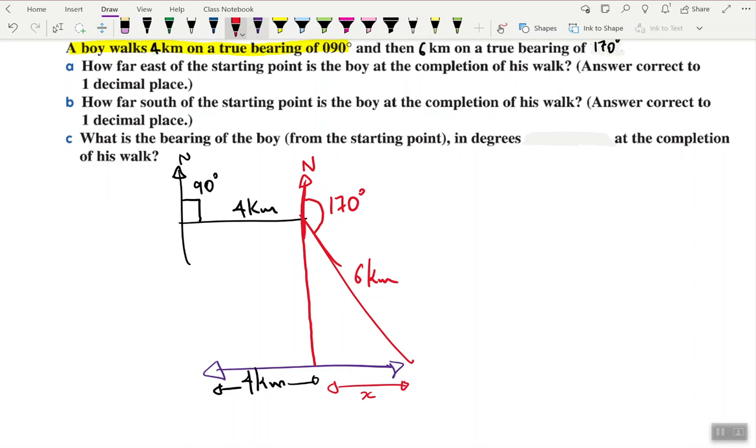I need to use trigonometry to try and figure this out. If this true bearing of 170 was still there, we know that in a straight line angles add up to 180. This part that's remaining is 10 degrees.